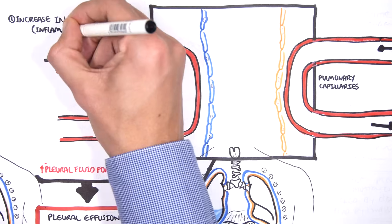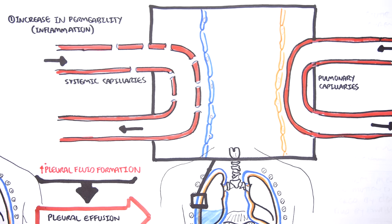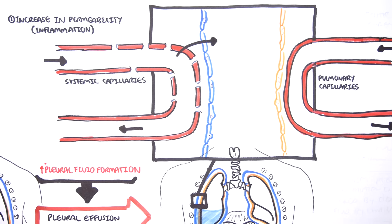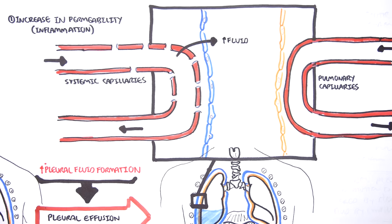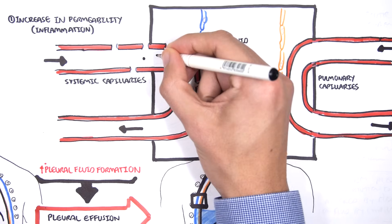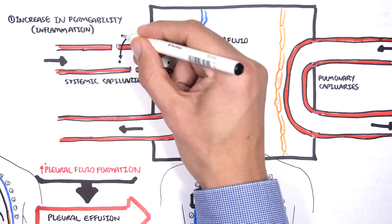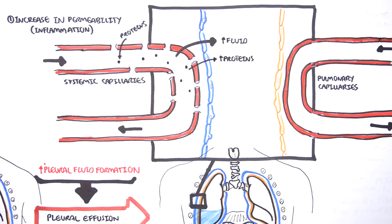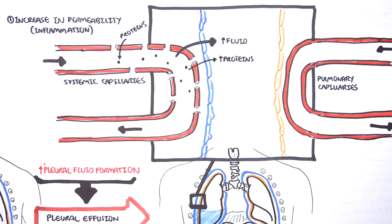Inflammation will trigger the vessel cells to contract, causing an increase in vascular permeability. When there is an increase in vascular permeability, fluid and proteins will leak from the vessels into the pleural space, which increases fluid formation essentially in the pleural space, and so leads to pleural effusions. The capillaries leaving the pleural membrane will return to the heart eventually via the veins.